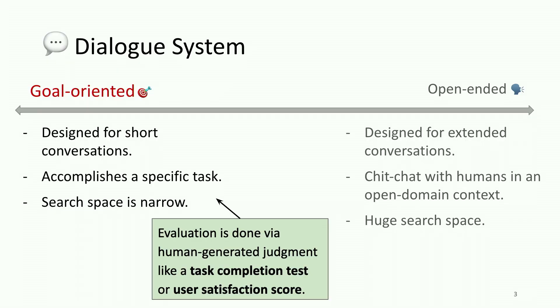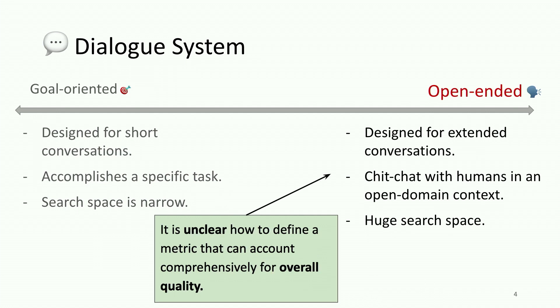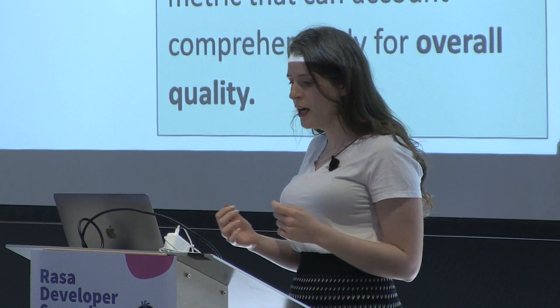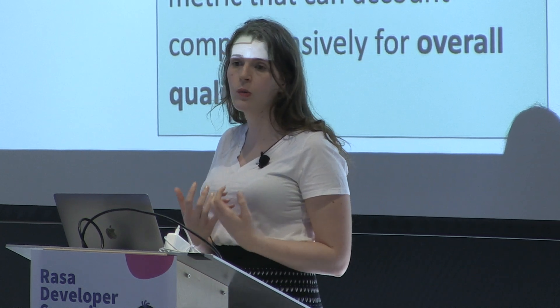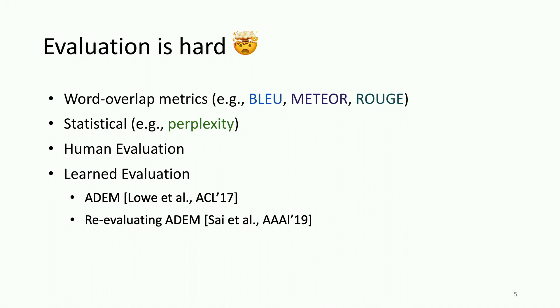There are a lot of challenges that we can face when building dialogue systems, and one of them is evaluation. Typically for goal-oriented dialogue systems, evaluation is done via human-generated judgment like task completion tests or user satisfaction scores. However, the task of evaluating open-ended dialogue systems is not well defined, as there is no explicit goal for chit-chat dialogue systems. So evaluation is super hard, especially for open-ended dialogue systems.